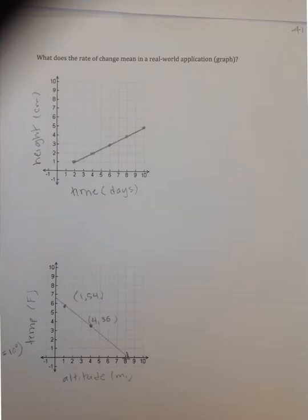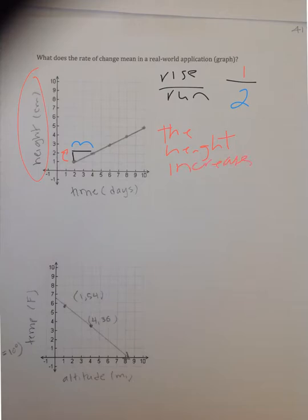If you take a look at your slope, which we talked about as rise over run, and if you make that little triangle, you are rising 1 and you are running 2. So what does that mean? The rise is your y value. So that has to do with your height. So the height increases 1 centimeter for every 2 days. You could say for every 2 days the height increases 1 centimeter or the height increases 1 centimeter for every 2 days.